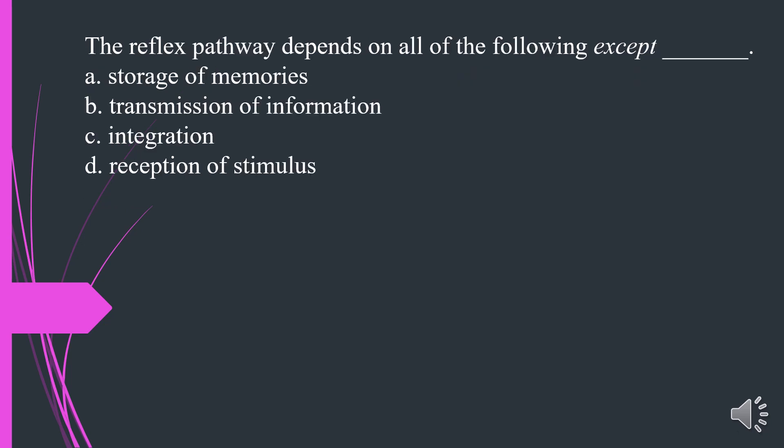The reflex pathway depends on all of the following except what? A. Storage of memories. B. Transmission of information. C. Integration. D. Reception of stimulus. The answer is A. Storage of memories.